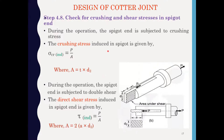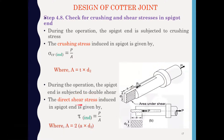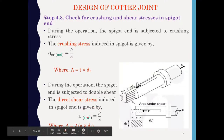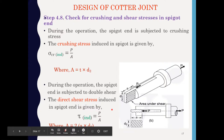Now we check for crushing and shear stress induced in the spigot end. The crushing stress induced in the spigot is given by sigma_cr = P / A, where A = T × D2. During operation the spigot end is subjected to double shear. The direct shear stress induced in the spigot end is given by tau = P / A. Using these two formulas we can find the shear stress and crushing stress induced in the spigot end.